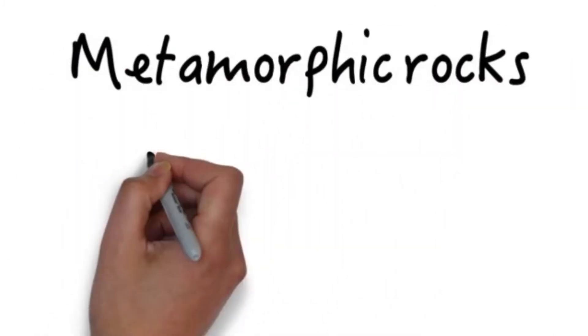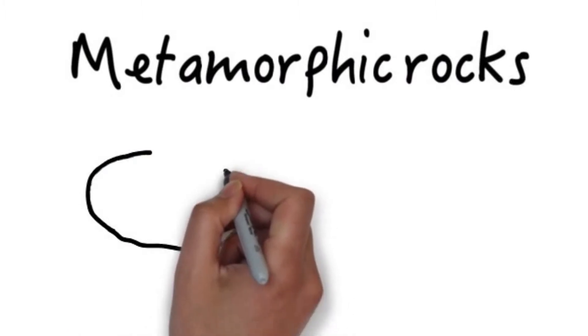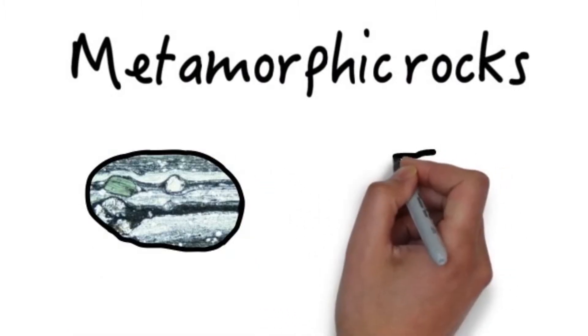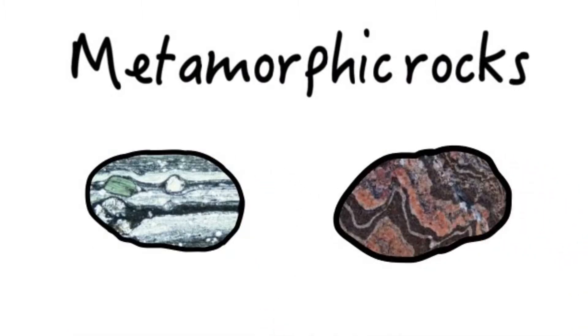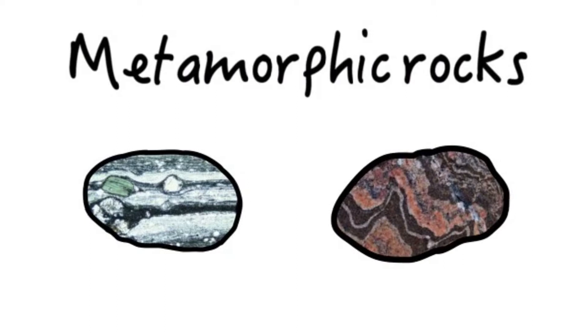Metamorphic rocks are a combination of igneous and sedimentary rocks. Heat and pressure work together to combine all minerals and form metamorphic rocks. These rocks are used for roof tiles and statues.